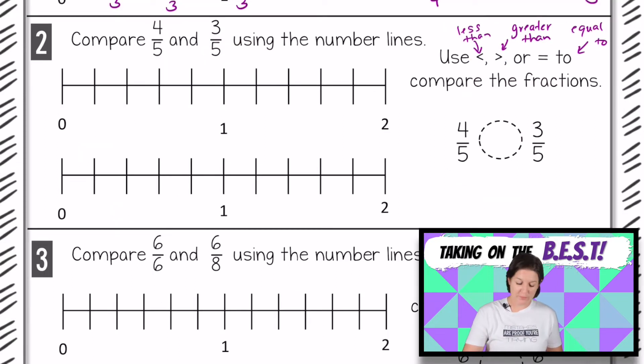For number two, we're comparing 4/5 and 3/5 using the number line below. So let's see what we've got here. For the first number line, we have 1, 2, 3, 4, 5 jumps between each whole. So we can plot 4/5 at the fourth jump. So 1/5, 2/5, 3/5, 4/5.